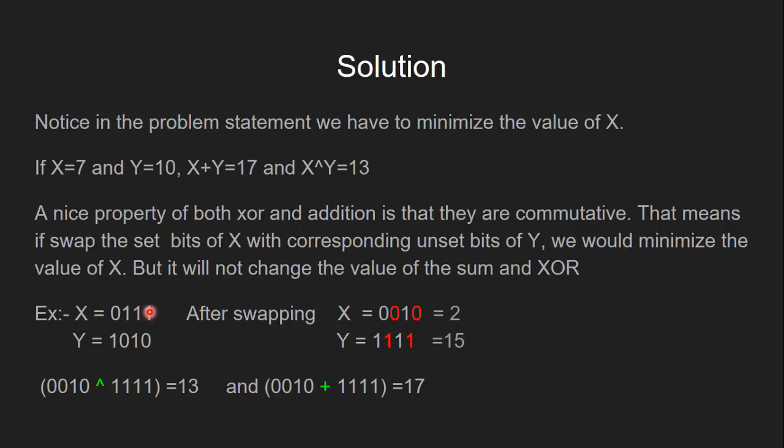Now what we are saying is that since we have to minimize the value of X, if we swap each set bit in X with the corresponding unset bit of Y, we will be able to minimize the value of X and at the same time it will have no effect on the sum of X and Y and the XOR of X and Y.